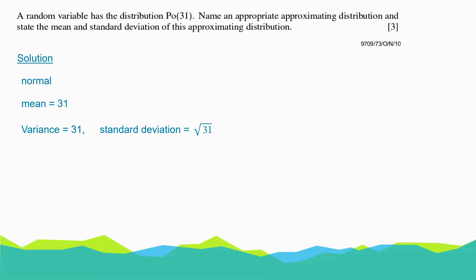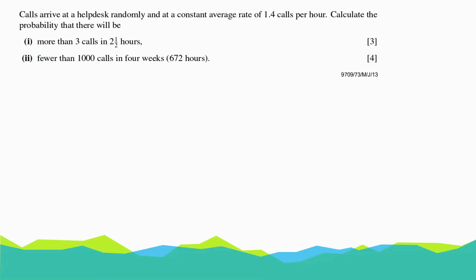Let's look at another example. Calls arrive at a help desk randomly and at a constant average rate of 1.4 calls per hour. Calculate the probability that there will be: number one, more than three calls in two and a half hours. The average rate per hour is 1.4, so for two and a half hours, lambda equals 2.5 times 1.4, which is 3.5. Therefore, X follows a Poisson distribution of mean 3.5 for a two-and-a-half-hour interval.